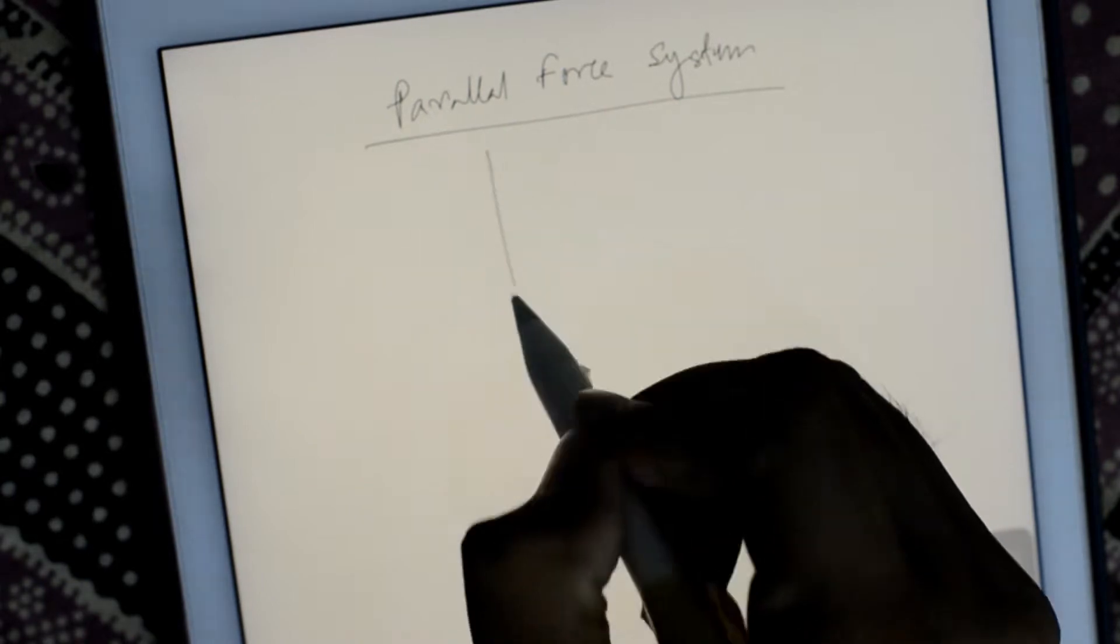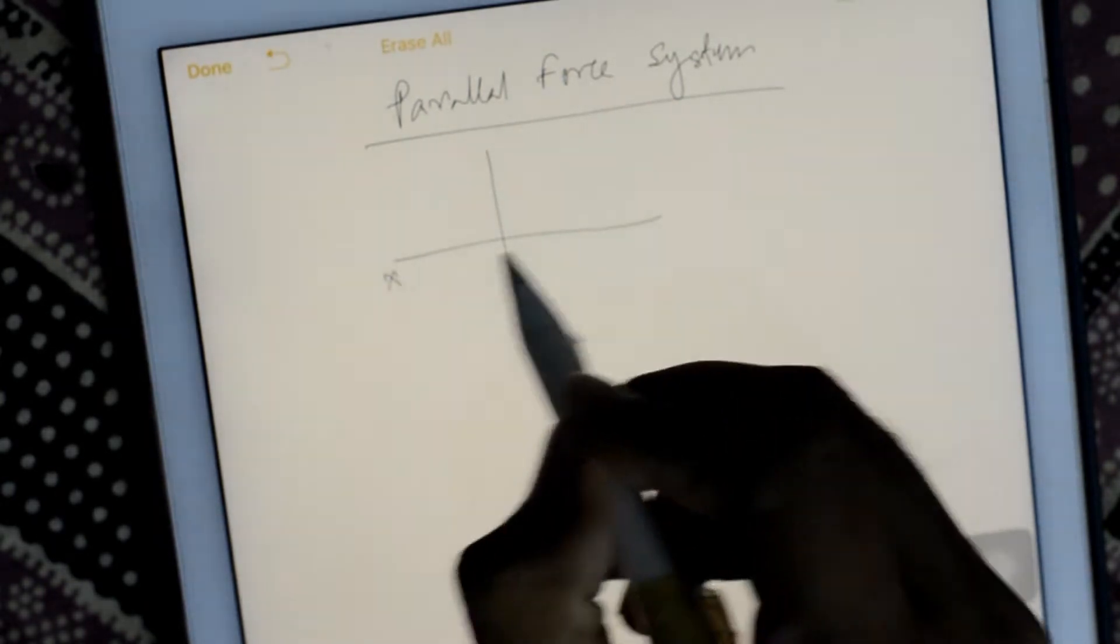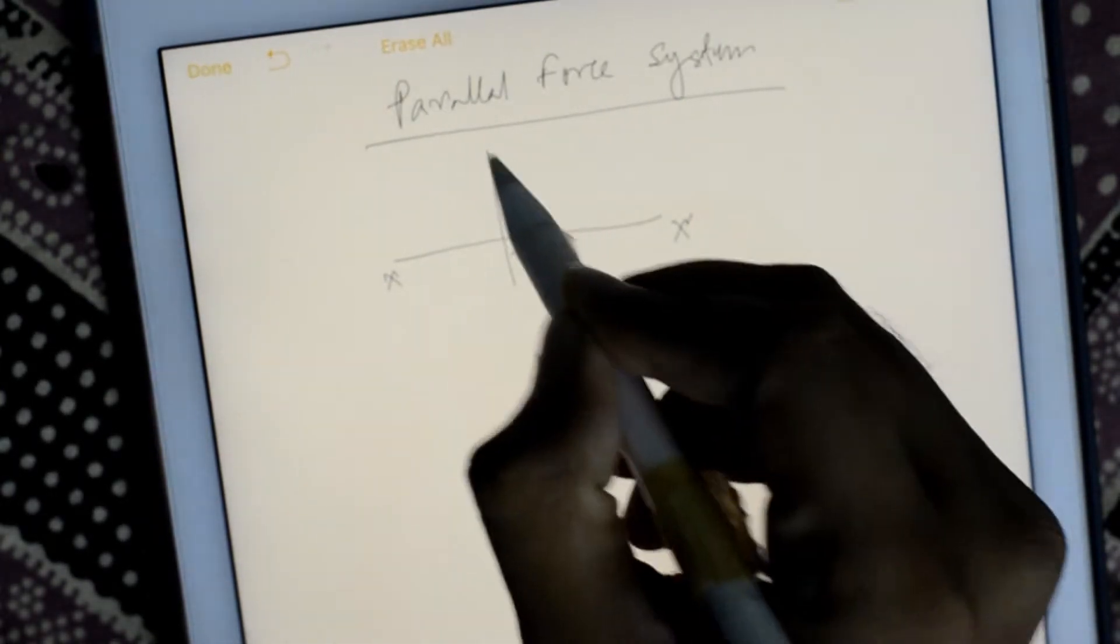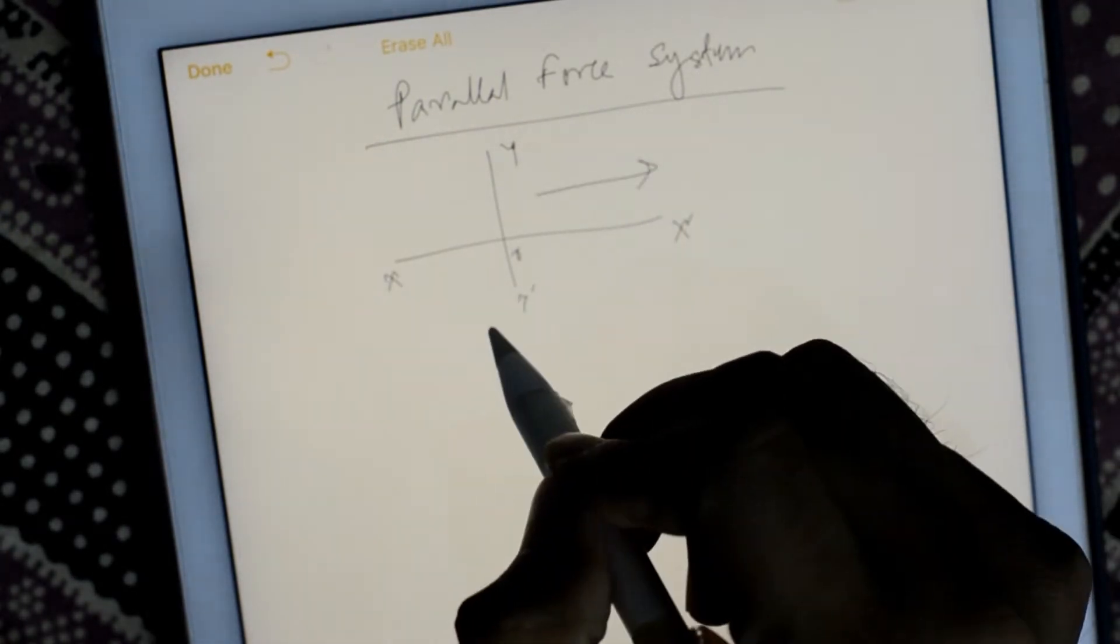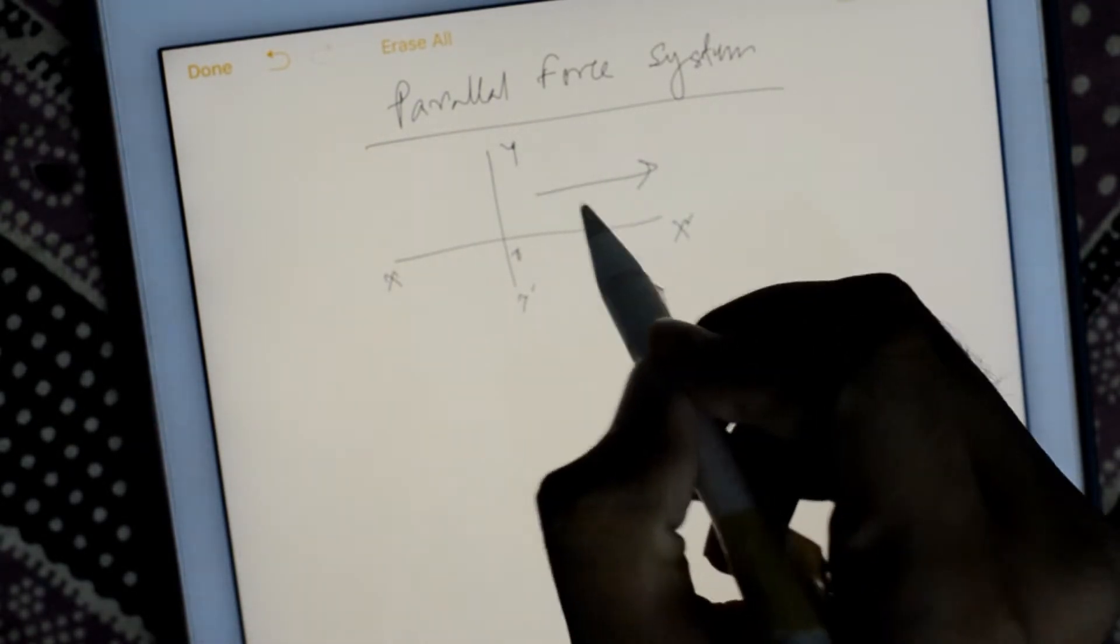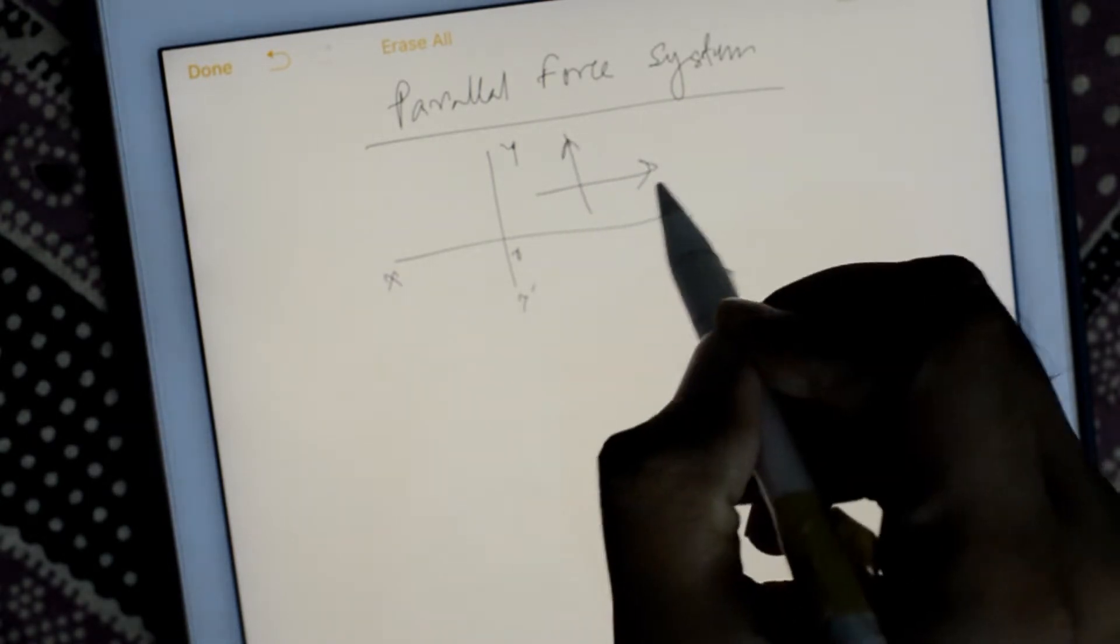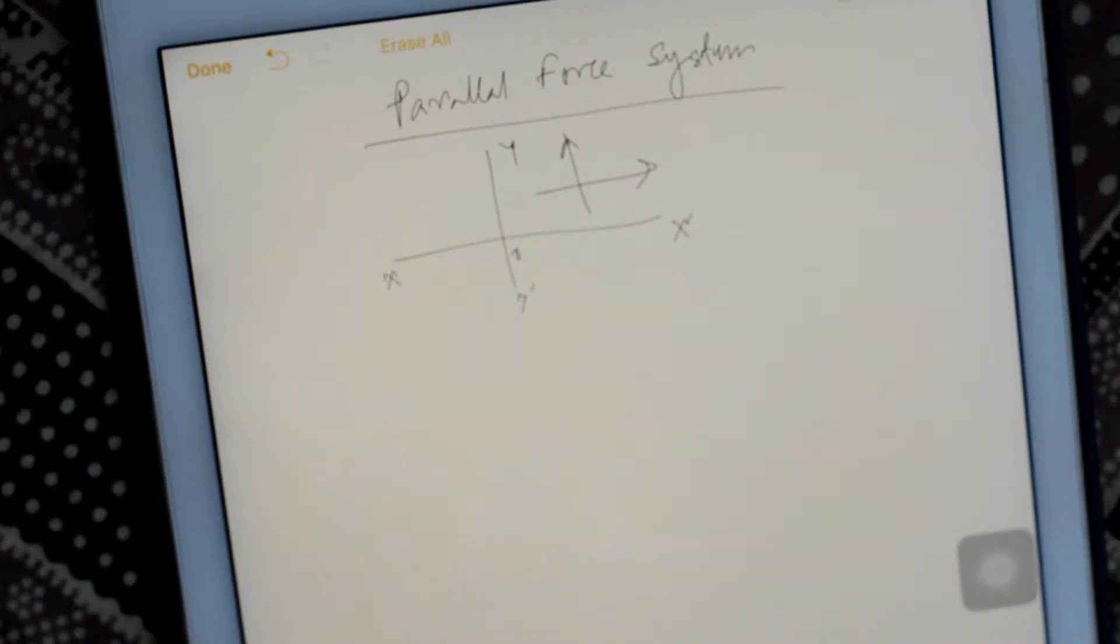Parallel force system means if this is a reference point x o x dash y y dash, then either this kind of force should be there or this kind of force should be there. So how to find...